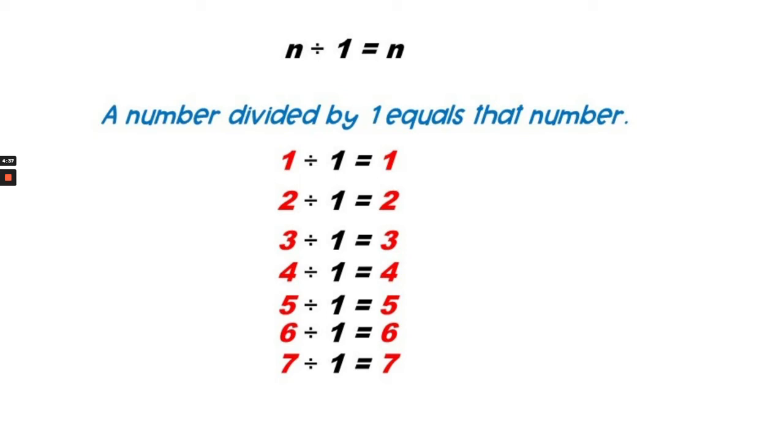how many would be in each group? 3. 3 divided by 1 equals 3. 4 divided by 1 equals 4. And so on.